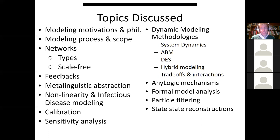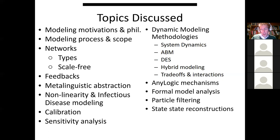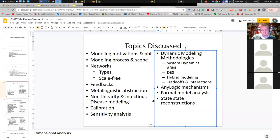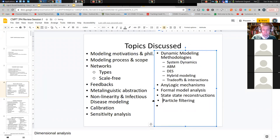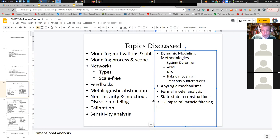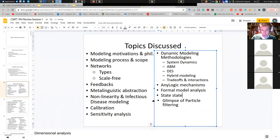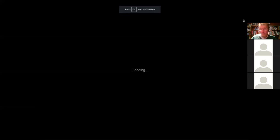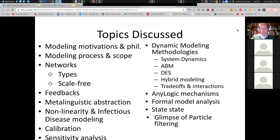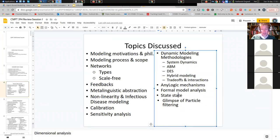We talked about the choice of these methods — I call it metalinguistic abstraction, but really I'm talking about trade-offs between dynamic modeling methodologies, basically choosing the methodologies. We talked about non-linearity and its role in infectious disease modeling — the fact that you need both susceptibles and infectives for someone to get infected is a sign that it depends non-linearly on these things. It's not merely doubling the number of susceptibles; you'll get double the number infected — no. In order to know how many people are infected, you need to know the number of infectives as well. Also calibration, sensitivity analysis, a glimpse of particle filtering, and state space — not state space reconstruction, that's a deeper topic we won't get into.